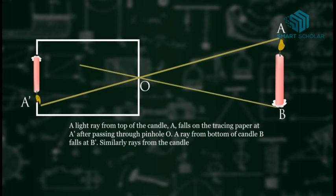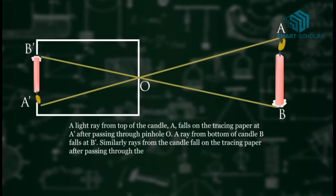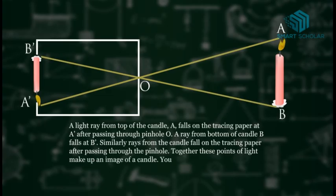Similarly, rays from the candle fall on the tracing paper after passing through the pinhole. Together, these points of light make up an image of a candle. You can see an inverted image B1 A1 of a candle.